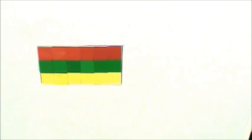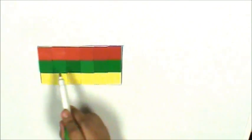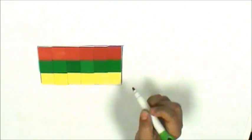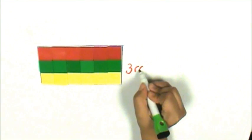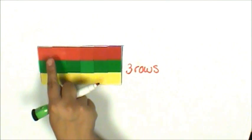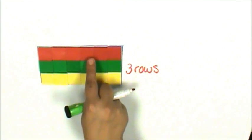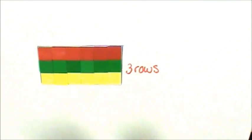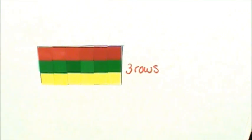Now, I can see that I have one, two, three rows with one, two, three, four, five, six square tiles in each row.